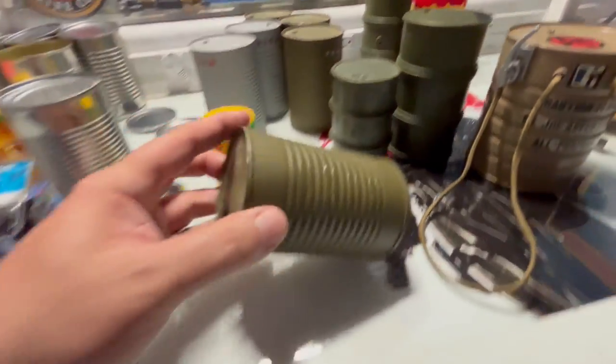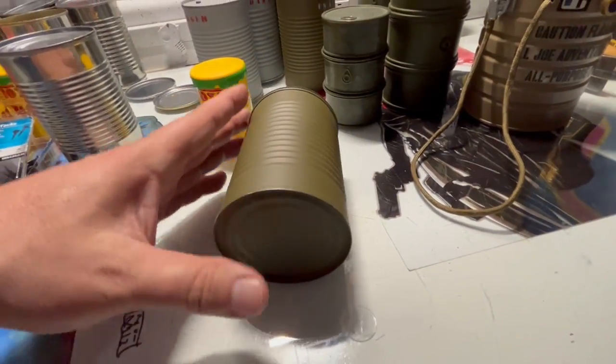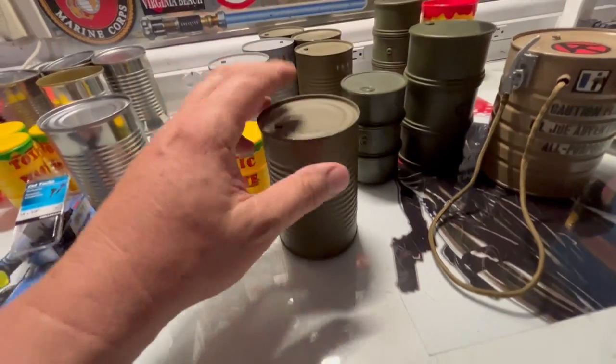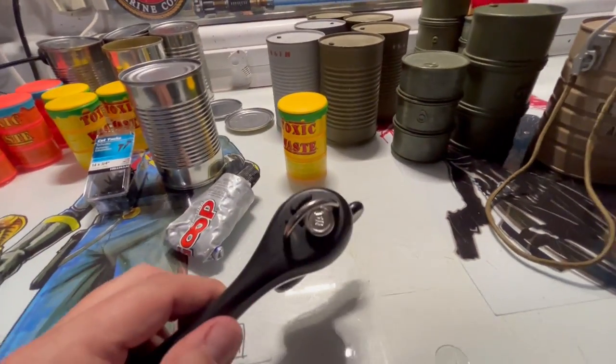You can use them as a diorama. Just lay them on their side. And if you do it this way, you have top and bottom by using the can opener.